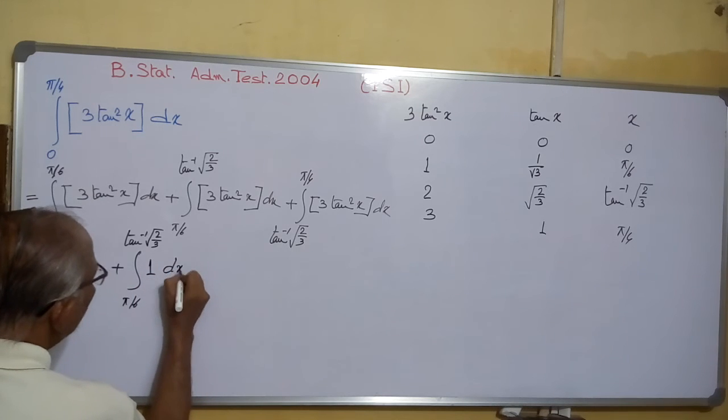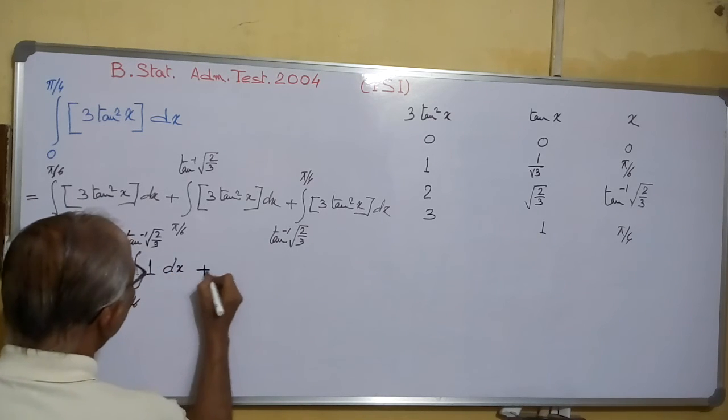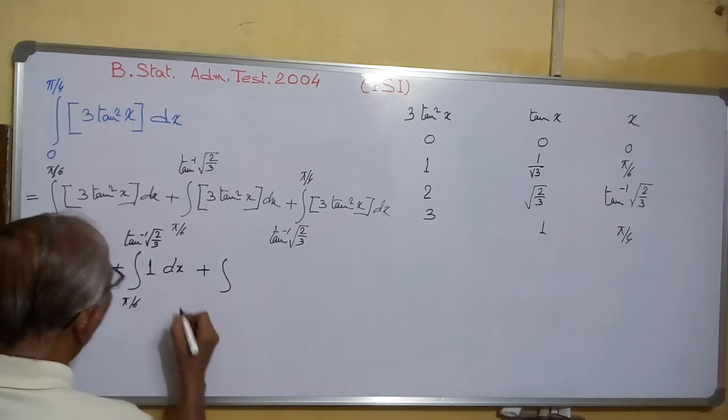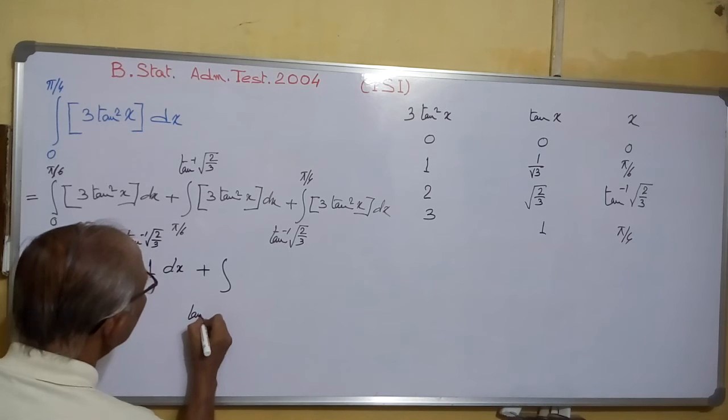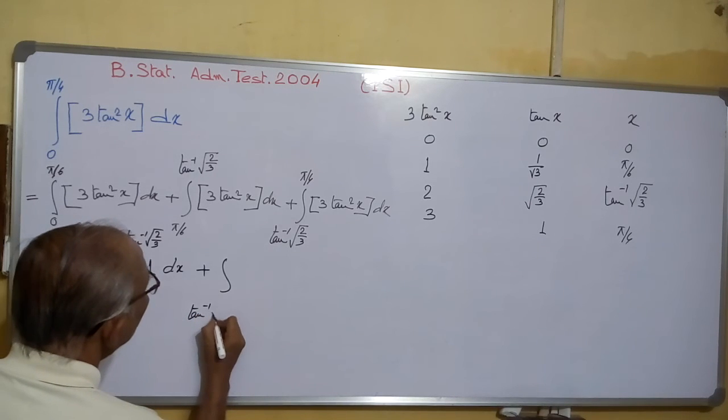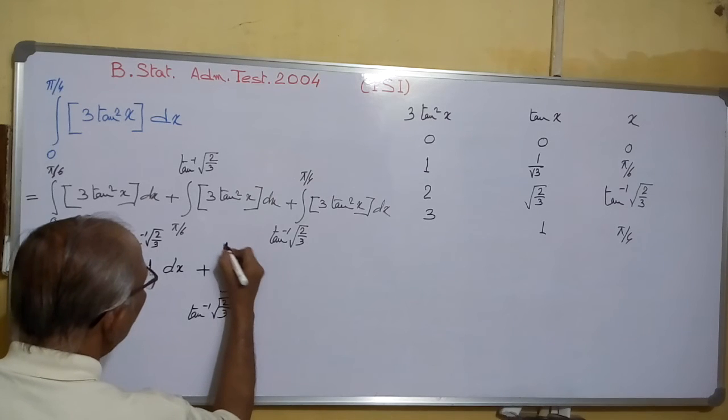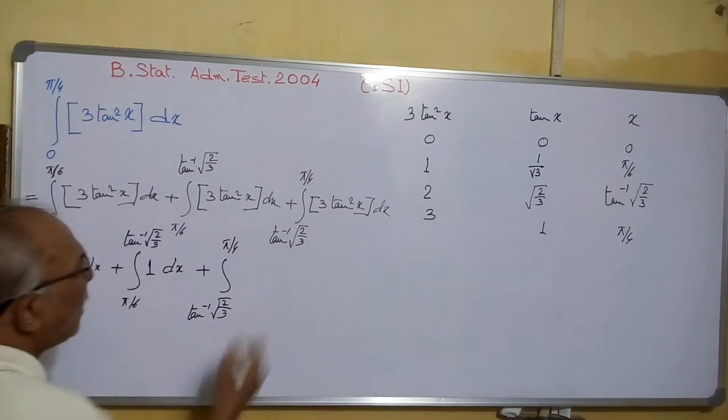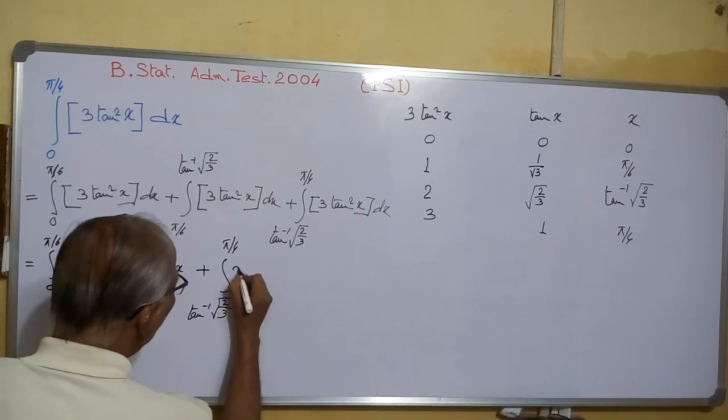Plus this one is from tan⁻¹(√(2/3)) to π/4. That is between 2 and 3, it is always 2.